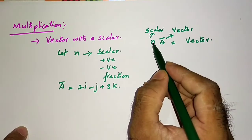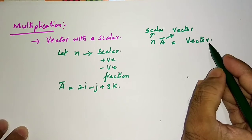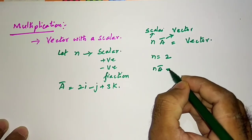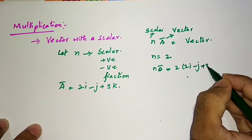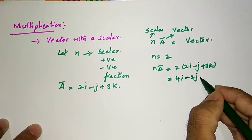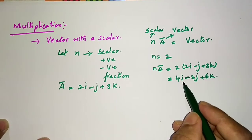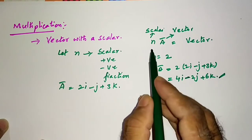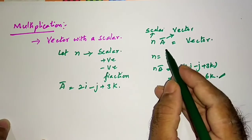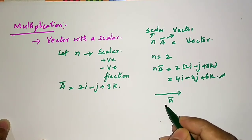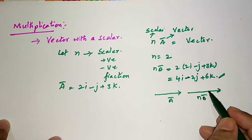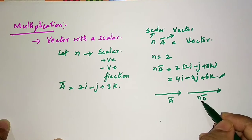Suppose n = 2. Then n·A = 2(2i − j + 3k) = 4i − 2j + 6k. We have i, j, k components, so it is again a vector. When you multiply a scalar with a vector, the magnitude of the vector increases n times without changing its direction, when n is positive.